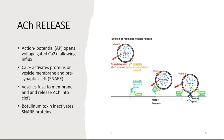Acetylcholine release: the action potential opens N-type voltage-gated calcium channels, allowing calcium influx into the terminal neuron. Calcium activates proteins on the vesicular membrane and pre-synaptic membrane known as SNARE proteins. When activated, these mobilize the vesicle to the pre-synaptic membrane, where it fuses and releases acetylcholine into the synaptic cleft. Notably, SNARE proteins are affected by botulinum toxin, which inhibits vesicle binding to the pre-synaptic membrane and therefore acetylcholine release, resulting in a flaccid paralysis.